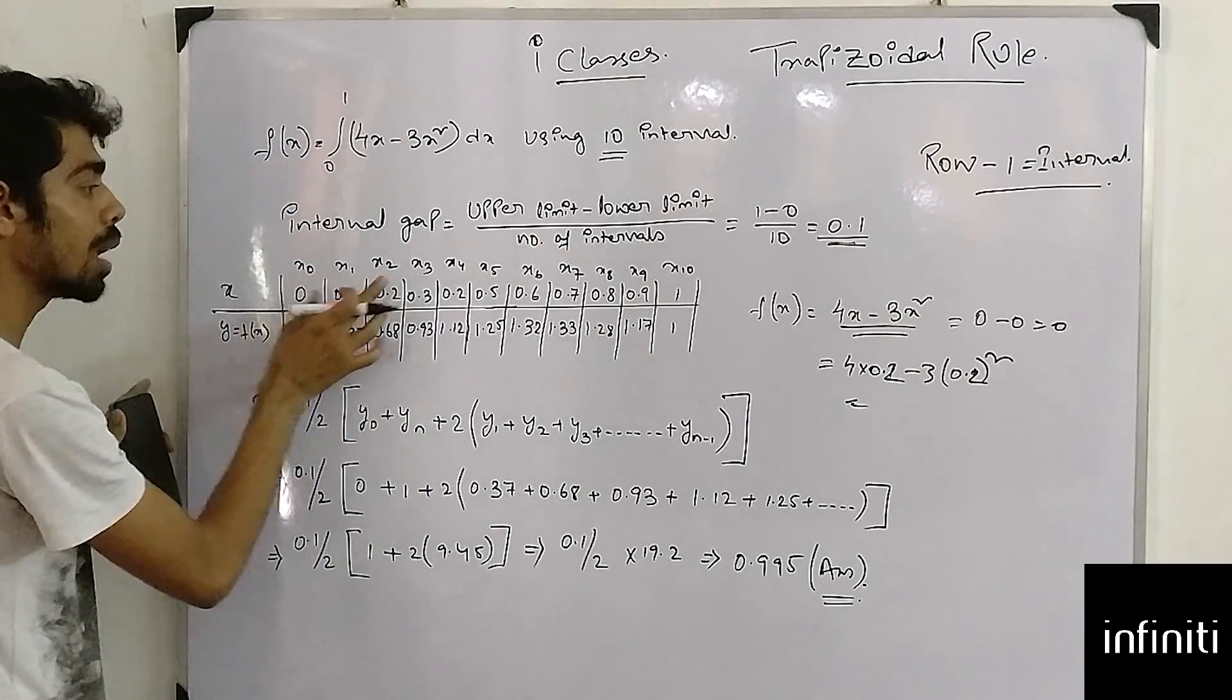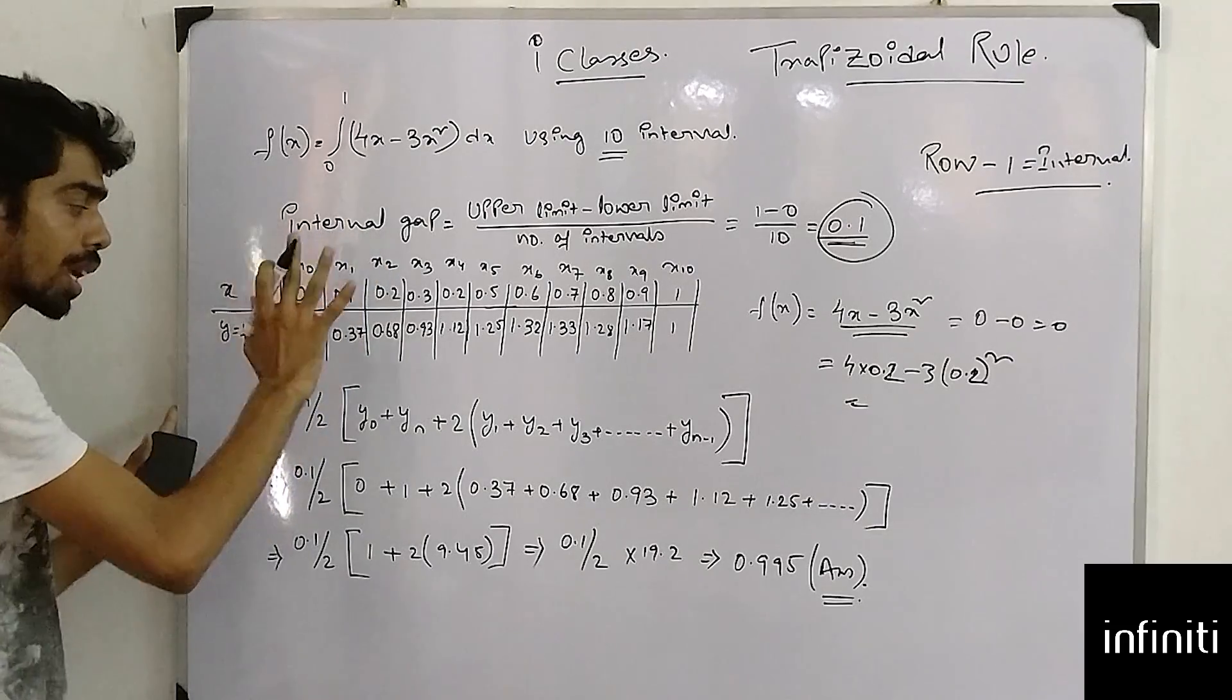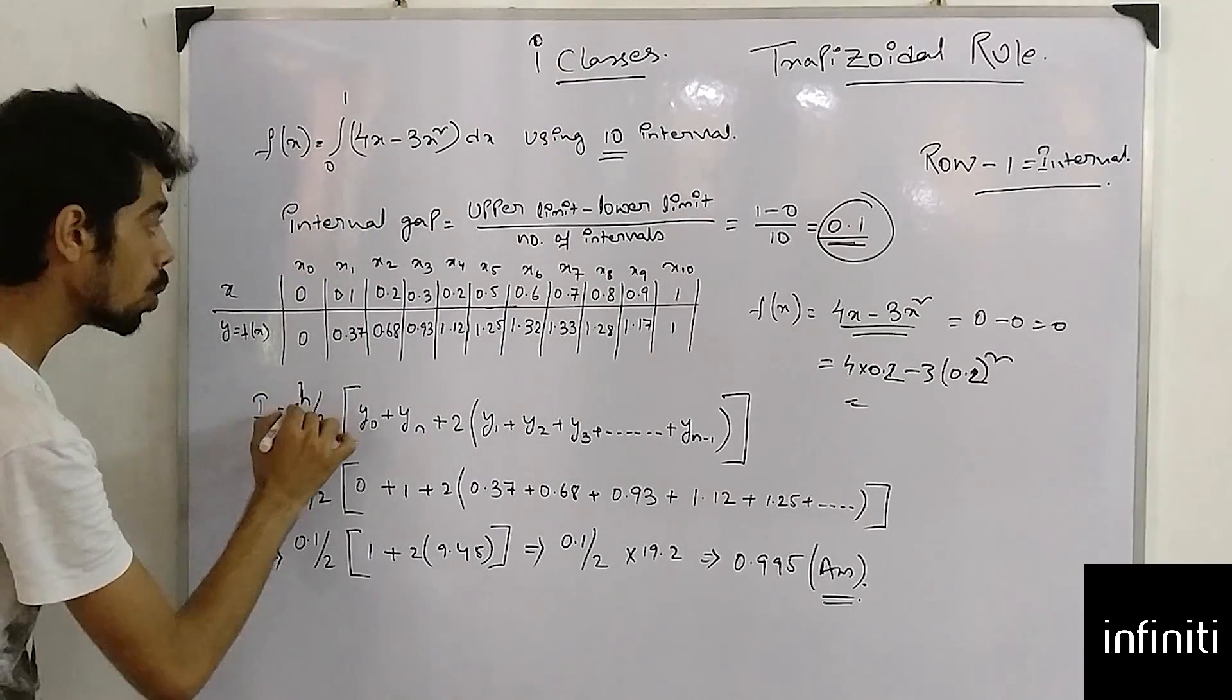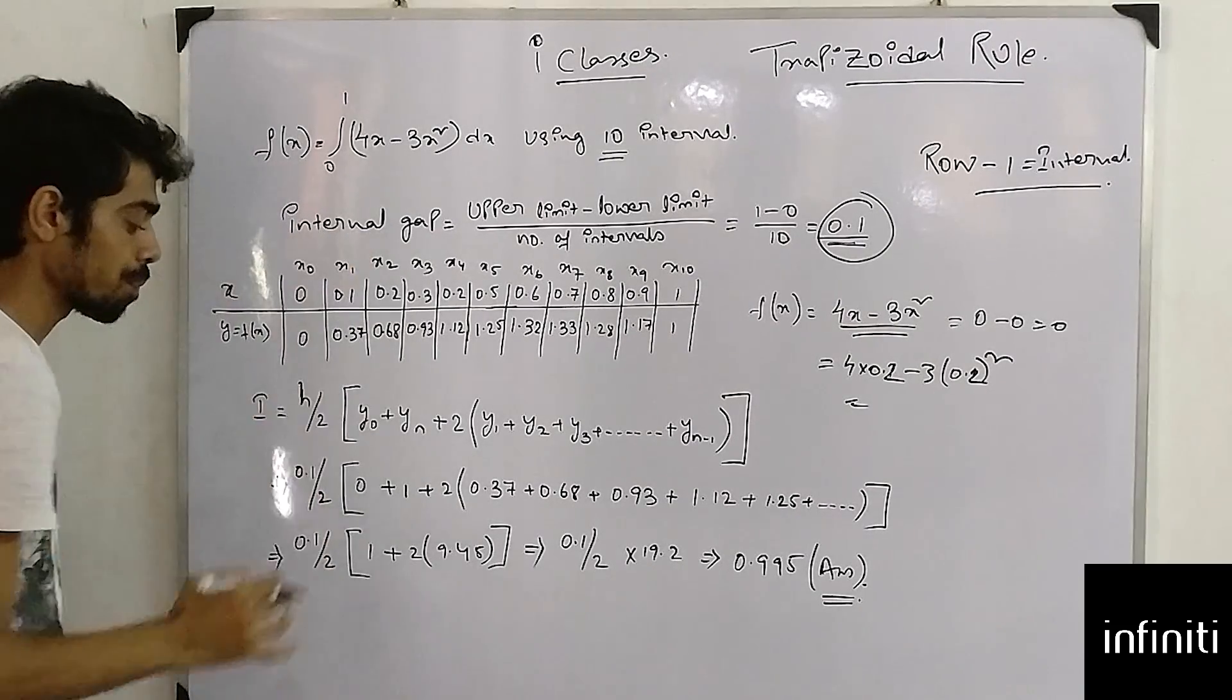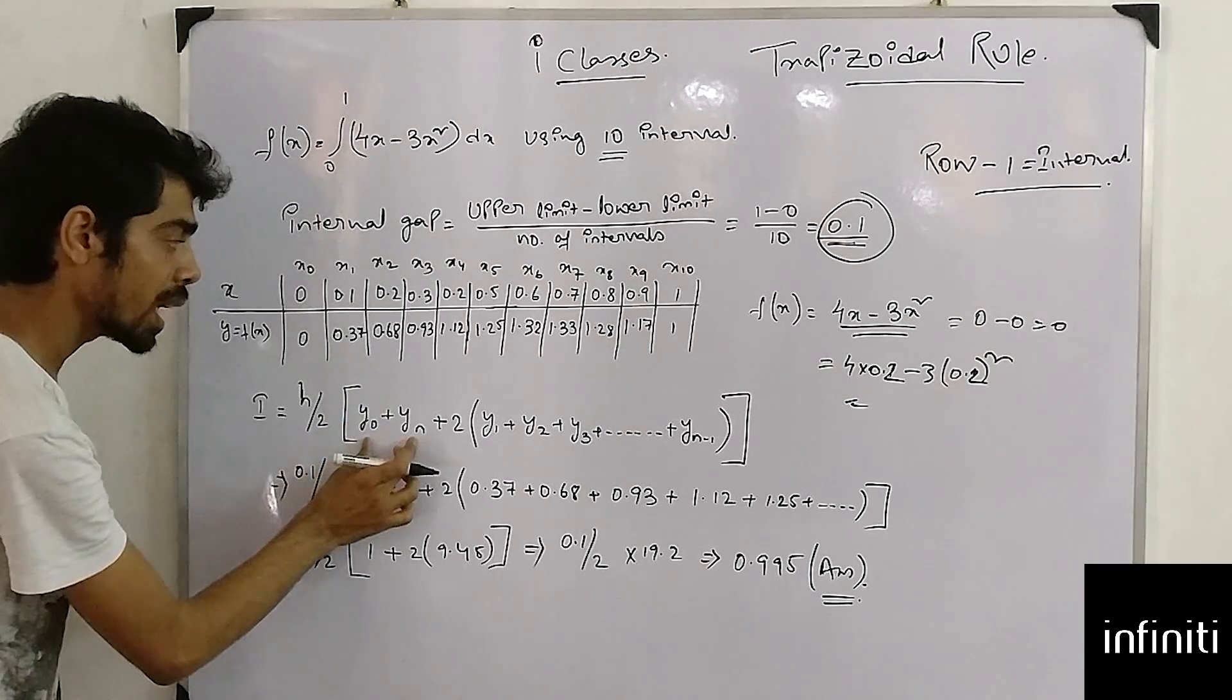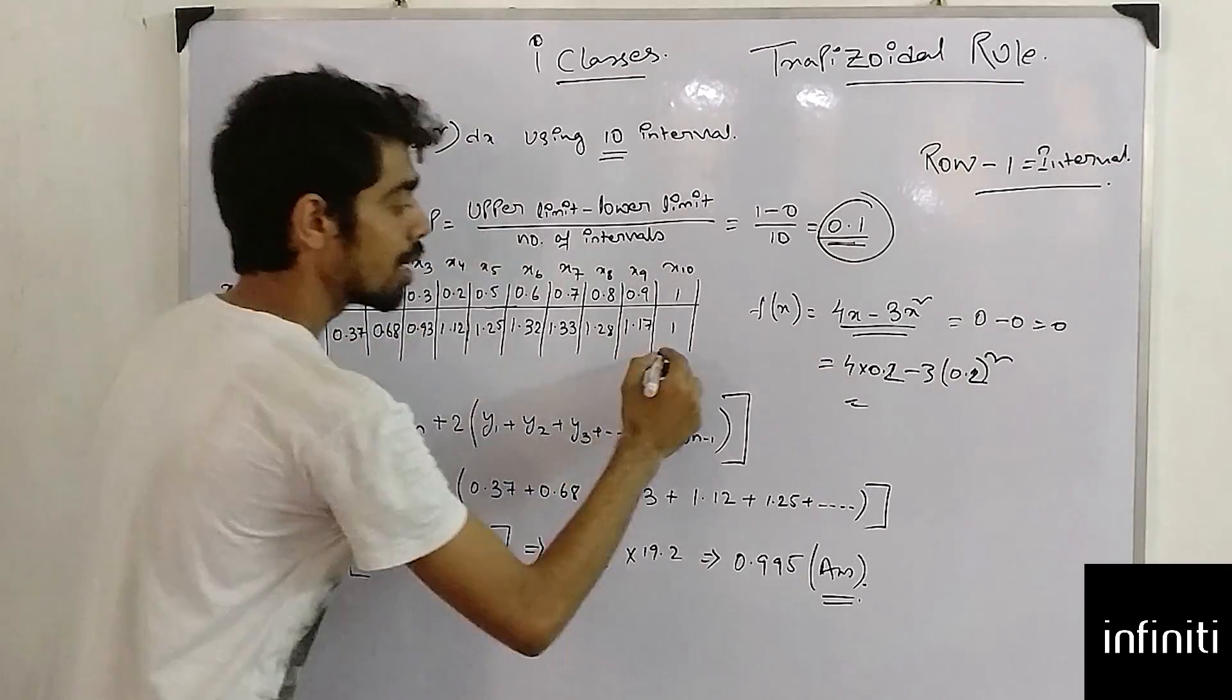Now what is my formula? My formula is h by 2. What is h? h is the internal gap. h by 2 bracket y0 plus yn, which is y0, this is y0. What is yn? This is yn.